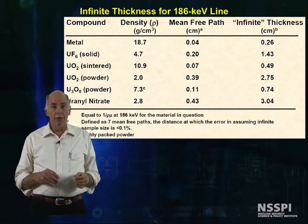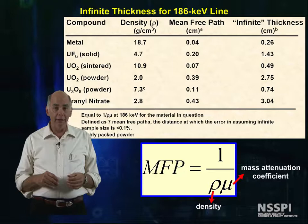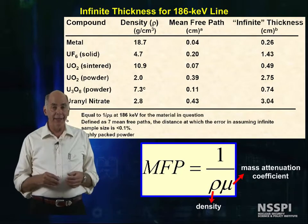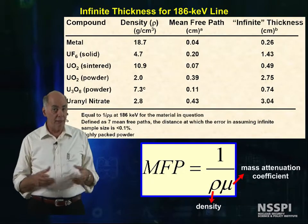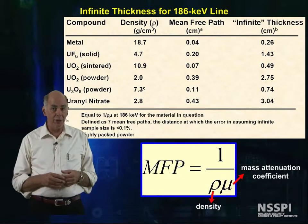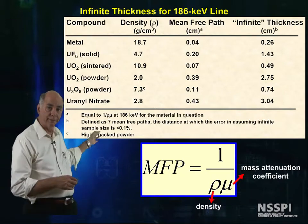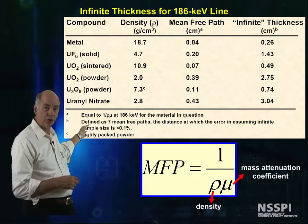The mean free path is calculated by taking the inverse of the product of the density and the mass attenuation coefficient, like so.